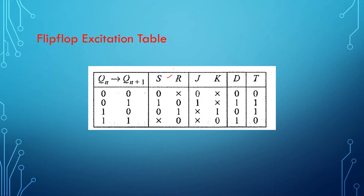For the JK flip-flop excitation table: present state 0, next state 0 → input 0x. Present state 0, next state 1 → give input 1,0 or 1,1, which means 1x. Present state 1, next state 0 → it must toggle, so give 1,1 or 0,1 — that is x1. Present state 1, next state 1 → it need not toggle, give 0,0 or 1,0 — that is x0.